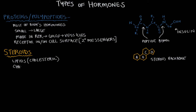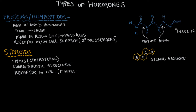This characteristic structure comes with a characteristic way of signaling a cell. Unlike proteins and polypeptides whose receptors are on the cell surface, steroids are made of lipids, so they have a really easy time passing through the cell membrane. Their receptors are located inside the cell — often in the cytoplasm or all the way in the nucleus. Steroids act as primary messengers, going inside the cell and affecting transcription and translation of new proteins.